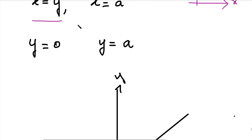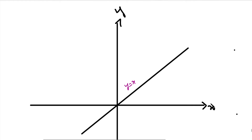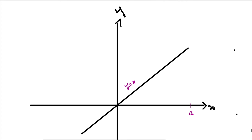The second line is x equal to a. The line x = a is perpendicular to the x-axis. At the point where x equals a on the x-axis, we draw a straight line perpendicular to the x-axis passing through a. So this is the line x = a.